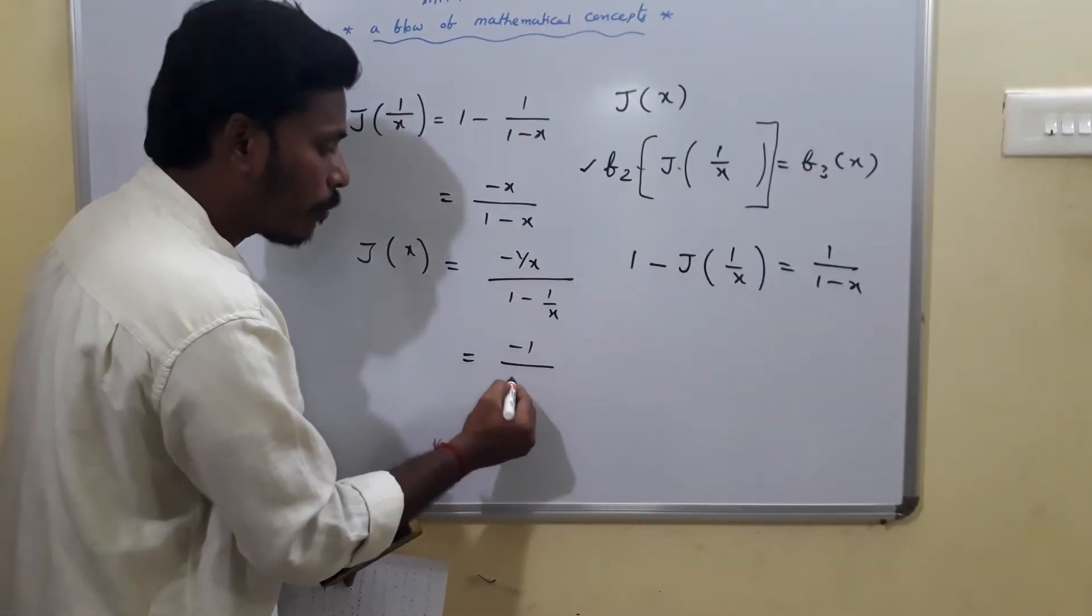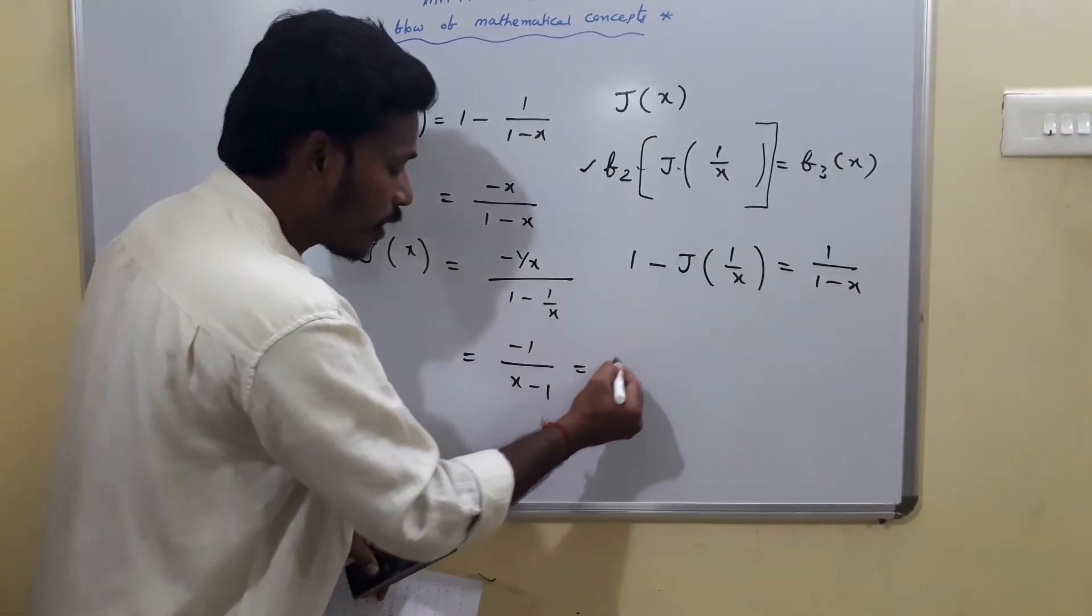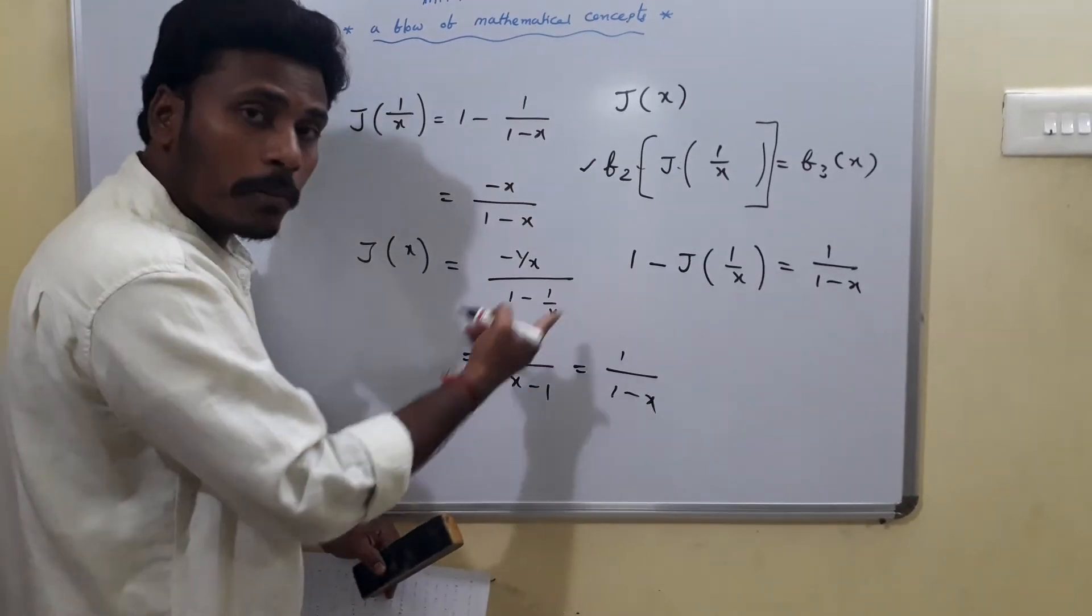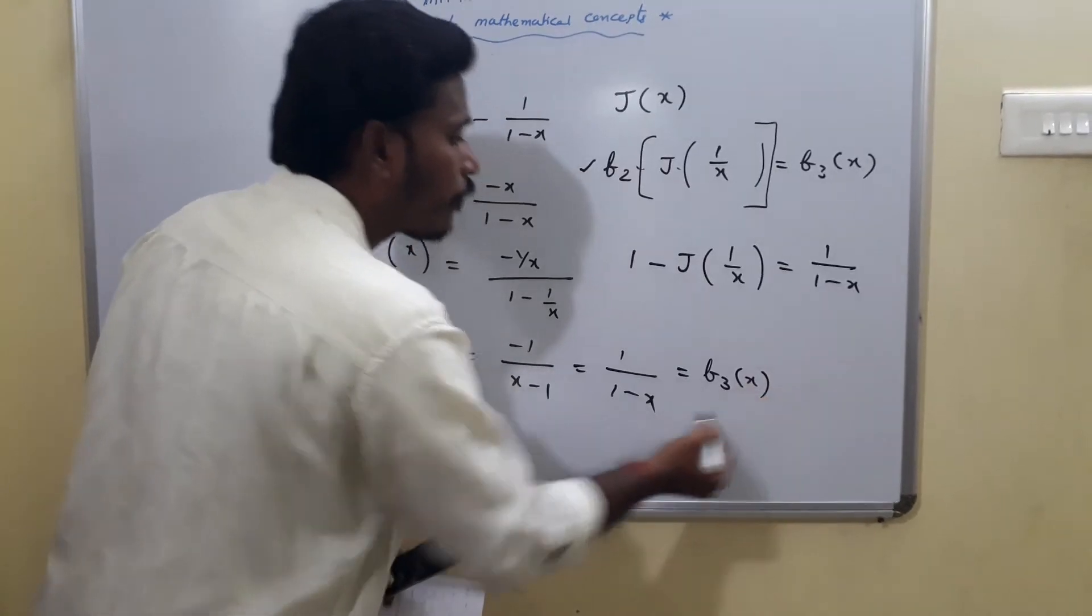Minus 1 by x minus 1 is nothing but 1 by 1 minus x, and this 1 by 1 minus x is equal to the given function F3 of x.